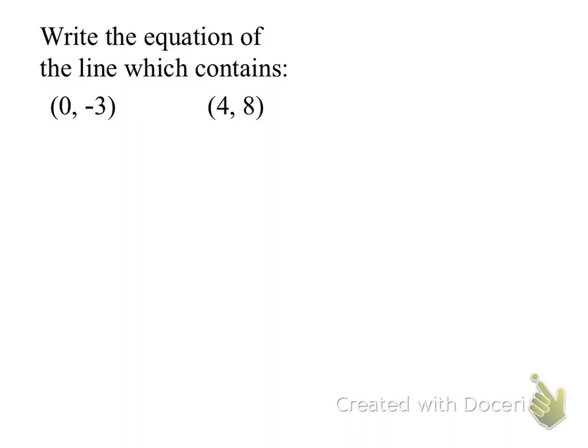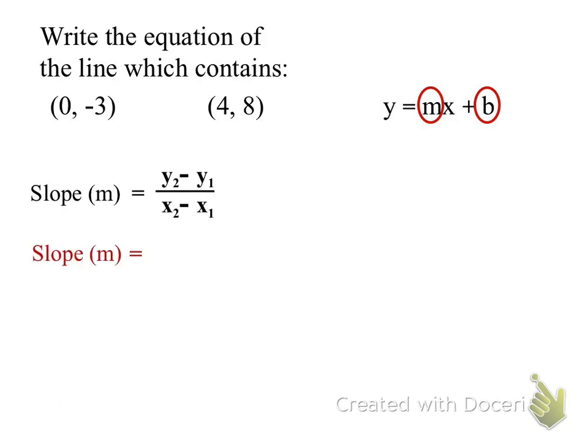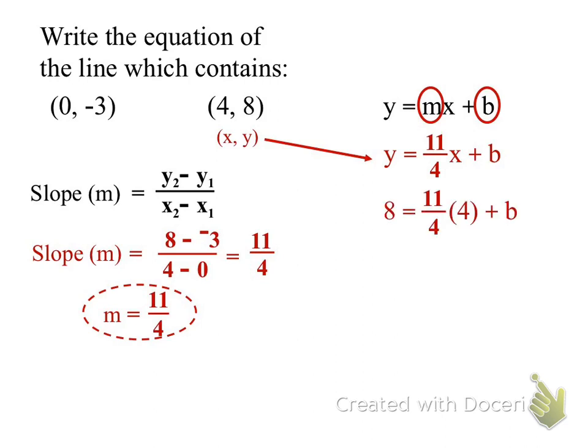Elise, I started off by going 8 minus negative 3, and then 4 minus 0. 8 minus negative 3 over 4 minus 0. Good. And what did you get? And then I got 11 over 4. Good. And so, then I did the slope intercept thing. And I did 8... I used 4, 8. So, I did 8 equals 11 fourths times 4 plus b. And then I multiplied 11 fourths times 4, and I got 8 equals 11 plus b. And then I subtracted 11 from both sides. Correct. So, b equals negative 3. Good. And then what's the equation? Y equals 11 fourths x minus 3. Perfect.